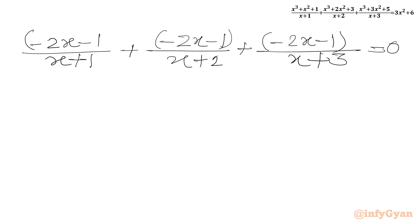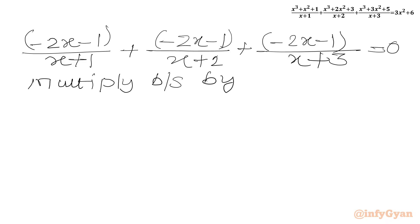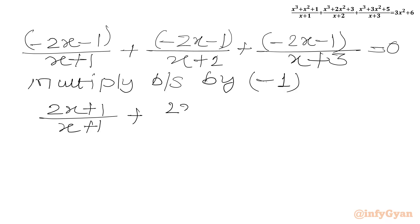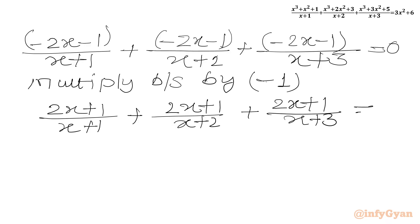Now we can take (−2x−1) common, or multiply both sides by −1. So multiplying both sides by −1, we get (2x+1)/(x+1) + (2x+1)/(x+2) + (2x+1)/(x+3) = 0.